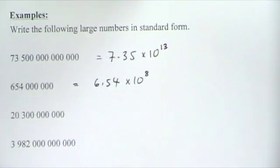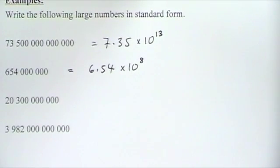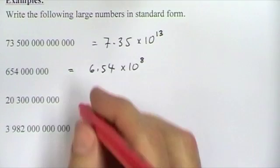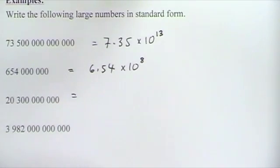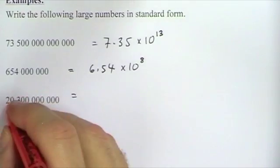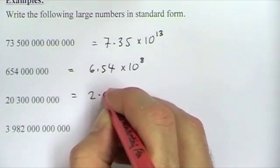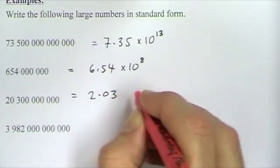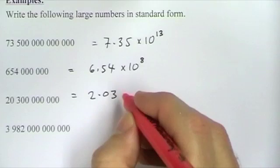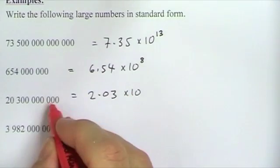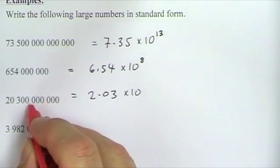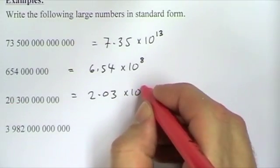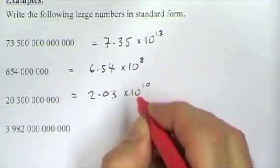Next, we've got 20,300,000. The first part, a number between 1 and 10, must be 2.03. The decimal place has moved 10 places, so it's 2.03 times 10 to the 10.